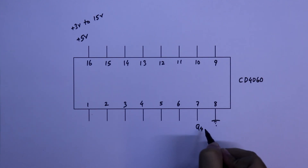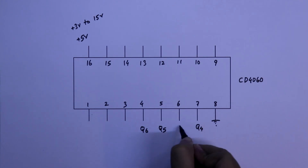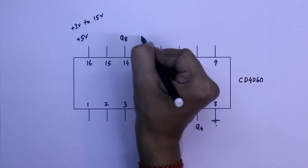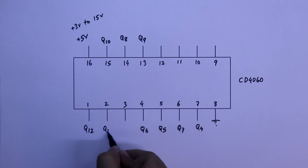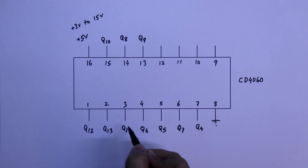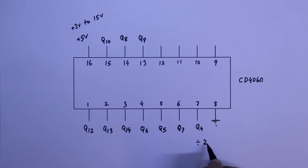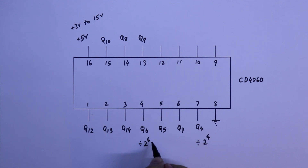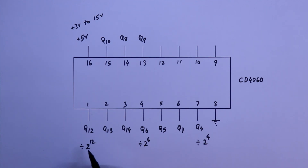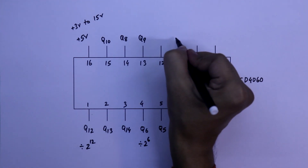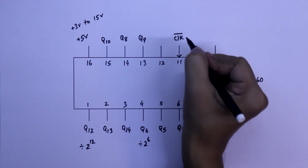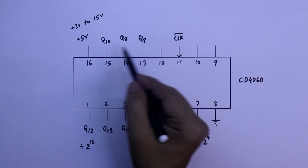Pin number 7 is Q4, then Q5, Q6, Q7, Q8, Q9, Q10, Q12, Q13, and Q14. Q4 means divided by 2 to the power 4. Q6 means divided by 2 to the power 6. Q12 means divided by 2 to the power 12. What we are going to divide? The input frequency. Pin number 11 is the clock input and it is active low, so we can divide the input frequency with these pins.